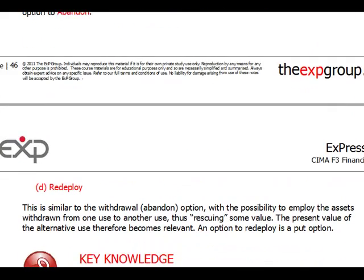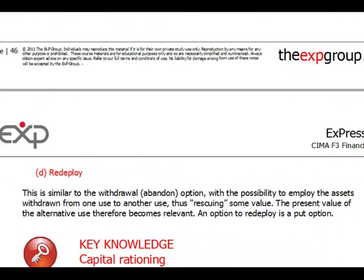Finally, the option to redeploy. This is where you take assets from one project and use them in another project that is ongoing, rescuing some value. If you buy a lot of machinery for a project and the project doesn't go well, it doesn't become a sunk cost because you can use it somewhere else. Therefore, you have an option, and that option has a value which needs to be incorporated into the value of the project.